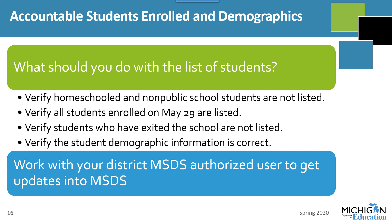When reviewing your list of students and demographics, verify that homeschooled and non-public school students are not included. Verify that currently enrolled students are listed, and continue to verify enrollment through the June deadline — but only students enrolled in MSDS as of May 29 will be included. Verify that students who have exited the school are not listed, and verify that student demographic information is correct. If you find errors, work with your district MSDS authorized user to get those updates made. You can find who that person is on the Secure Site's District and School Contacts page under the Assessment Registration drop-down.